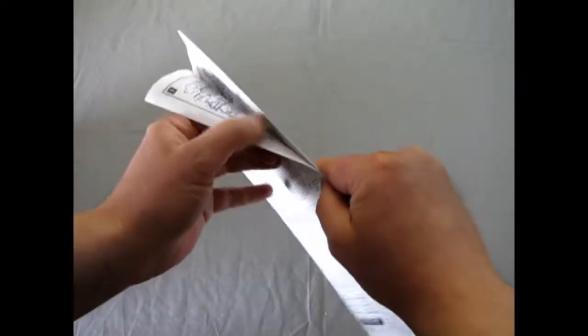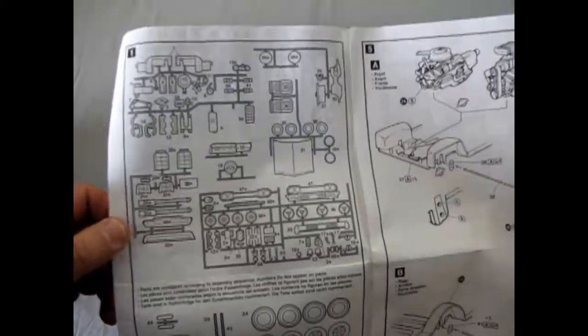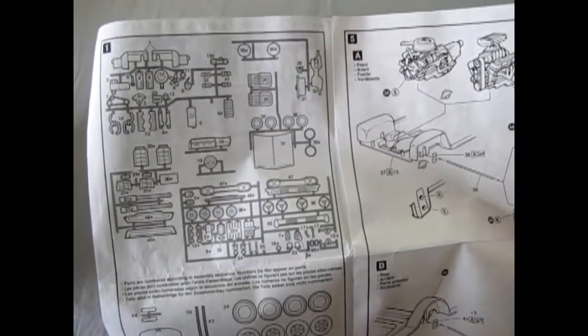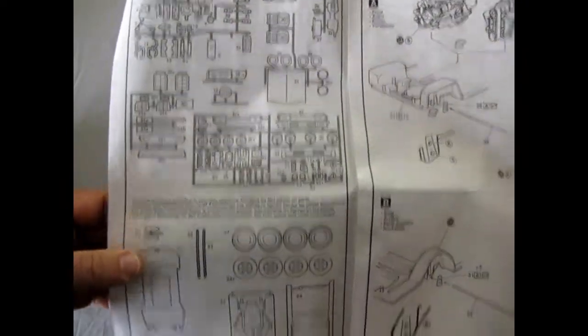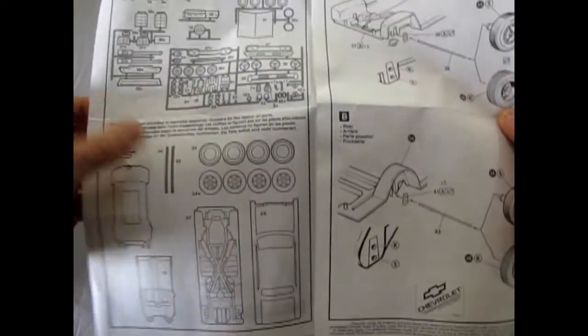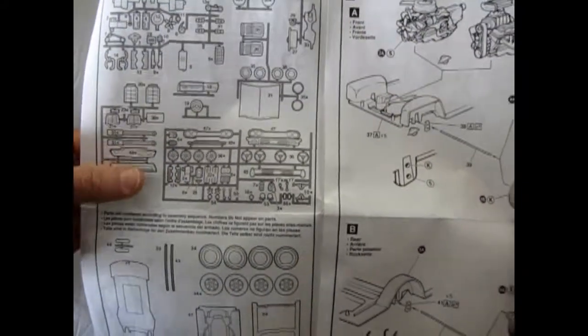Looking at the instructions, they do have some call-outs for the colors down here at the bottom. I don't need to show you the parts because here is the part explosion tree. There's the body, interior tub, wheels, grills, hubcaps, you name it.